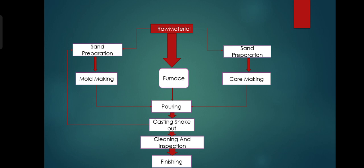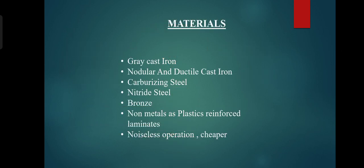These are the materials which are used for casting: grey cast iron, nodular and ductile cast iron, carbonizing steel, nitride steel, bronze, non-metals and plastic reinforced laminates.